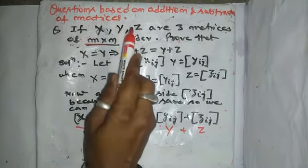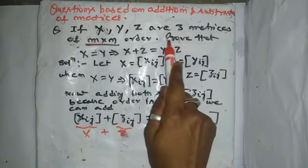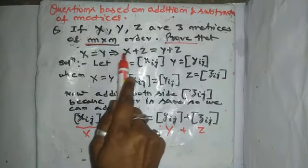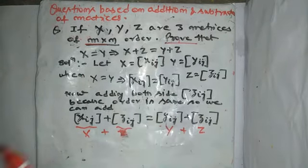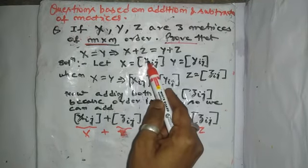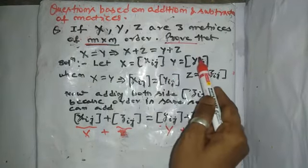We know matrices ke order same hai. We have to prove when X equal to Y implies that X plus Z equal to Y plus Z. Very simple question.